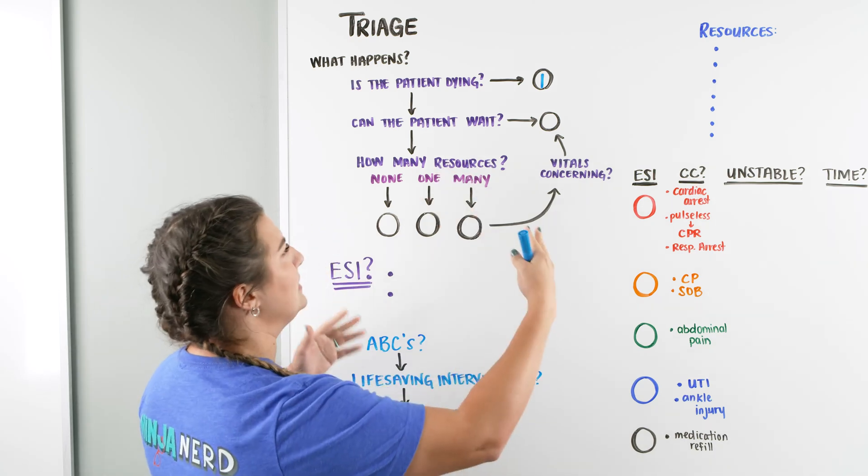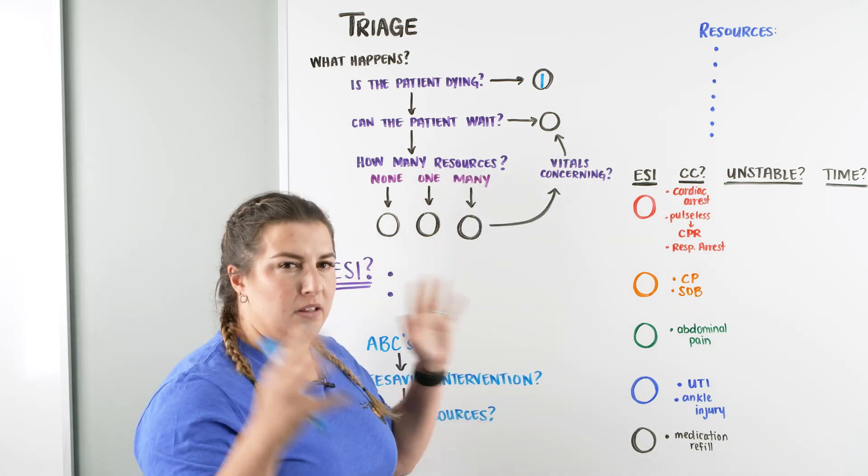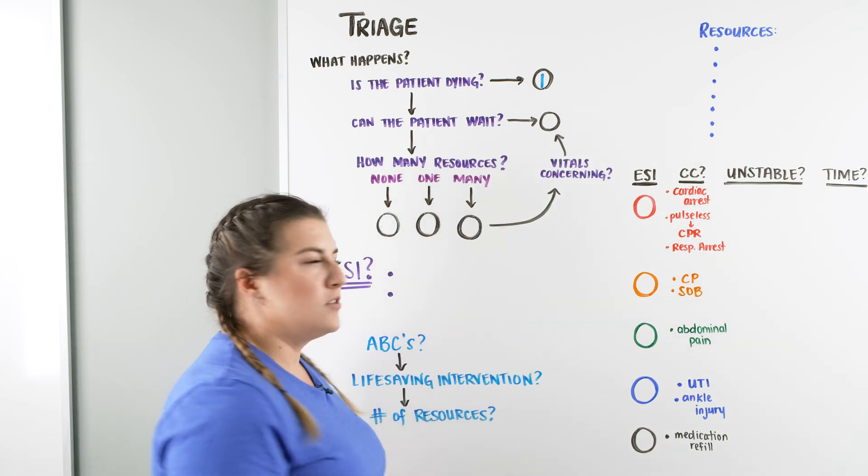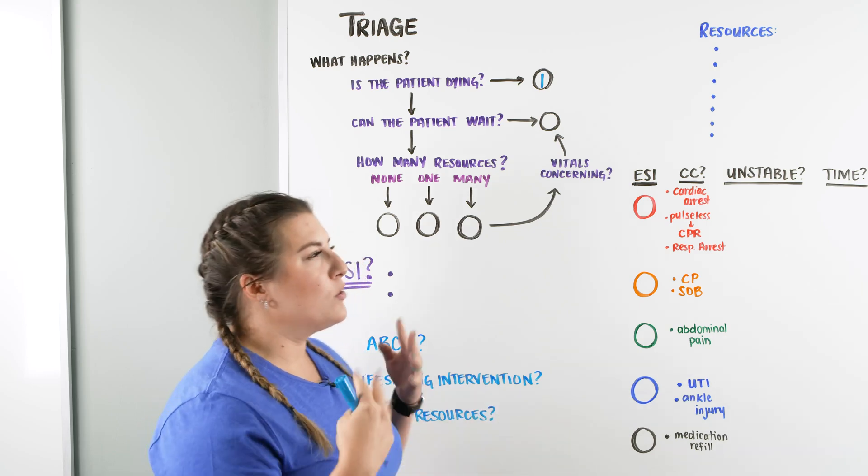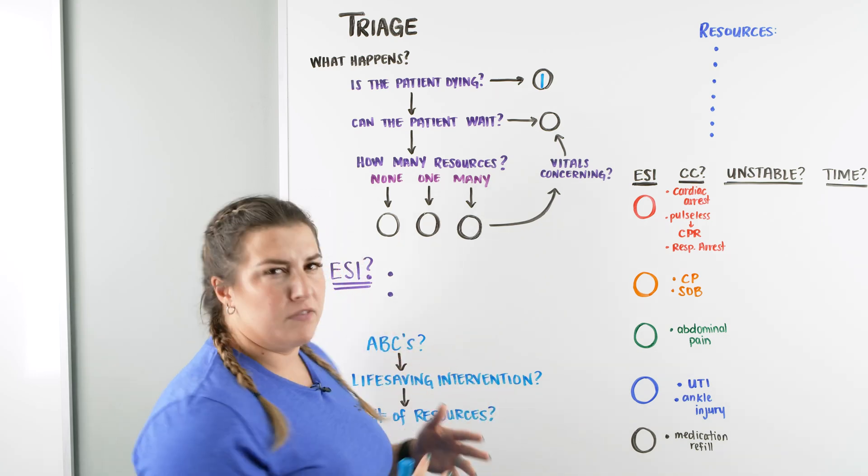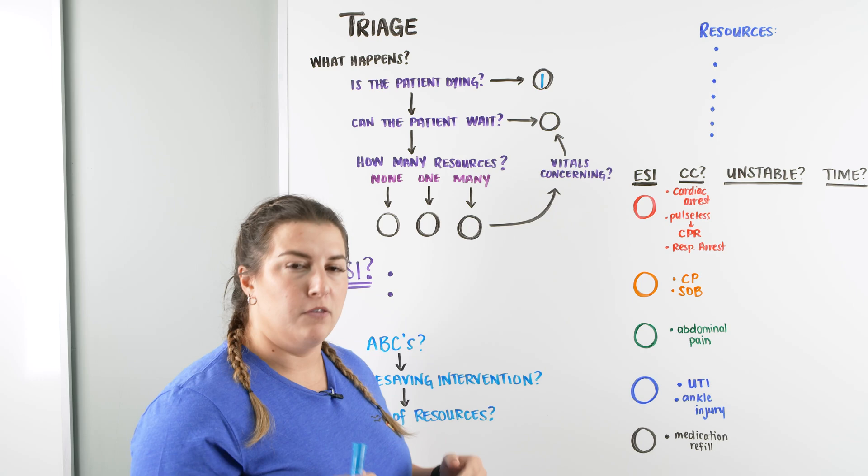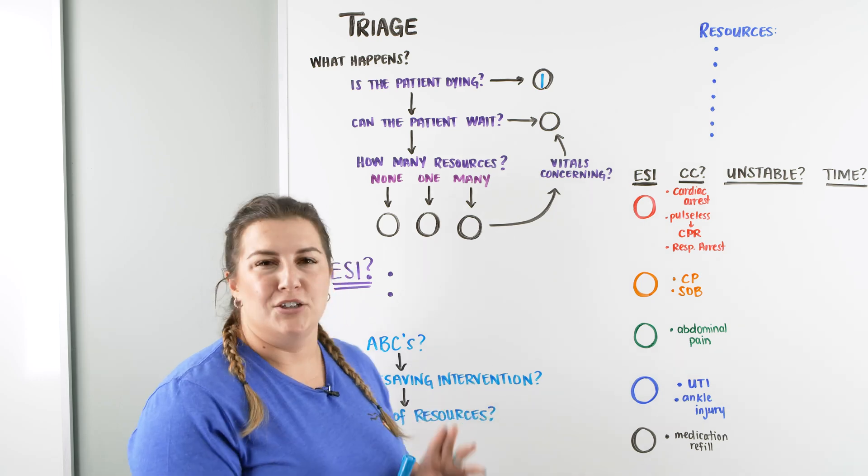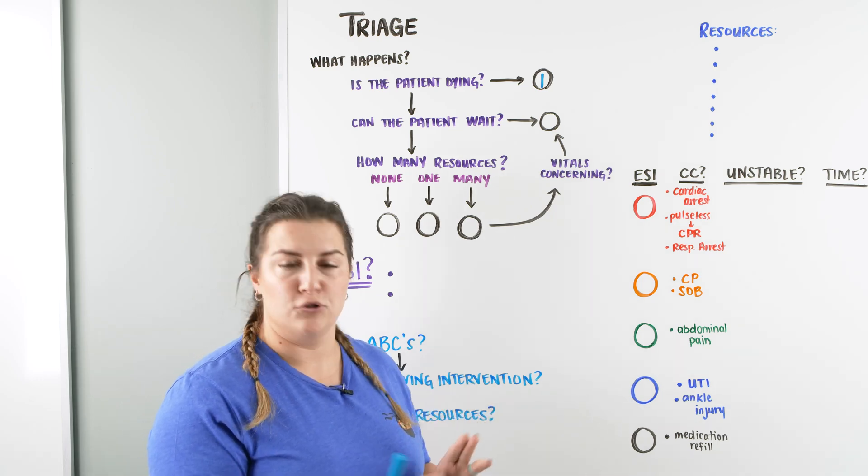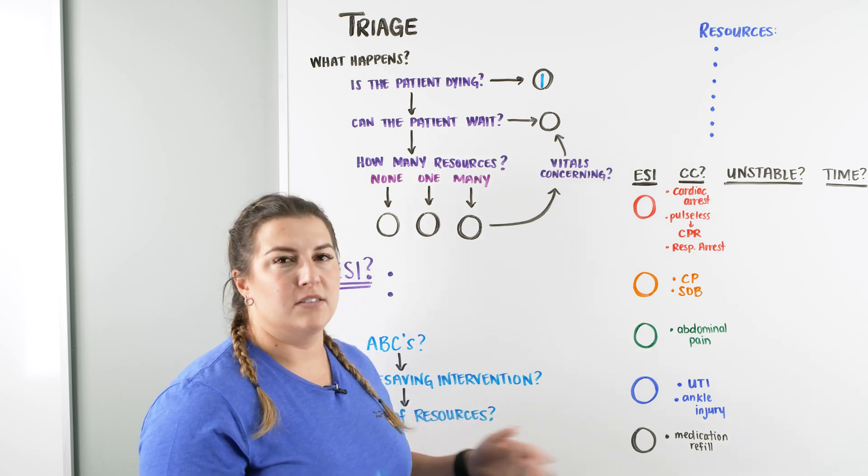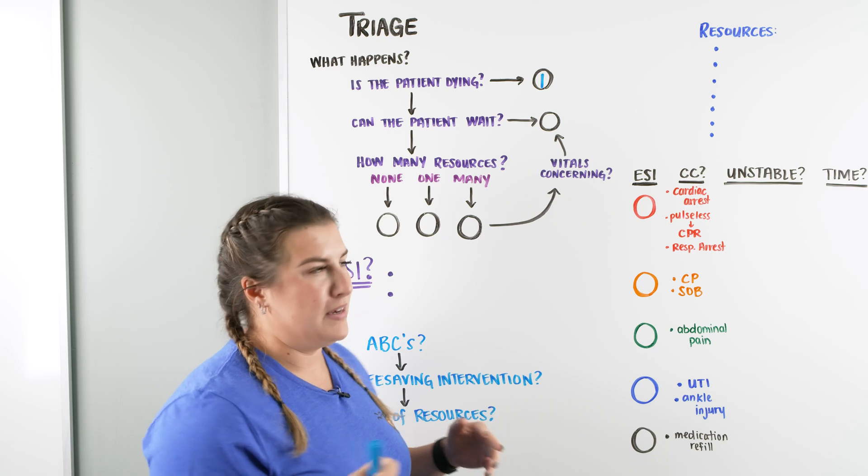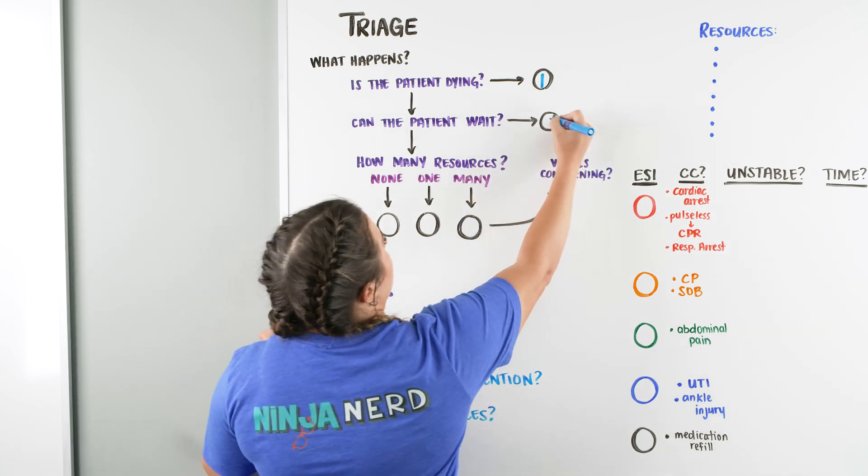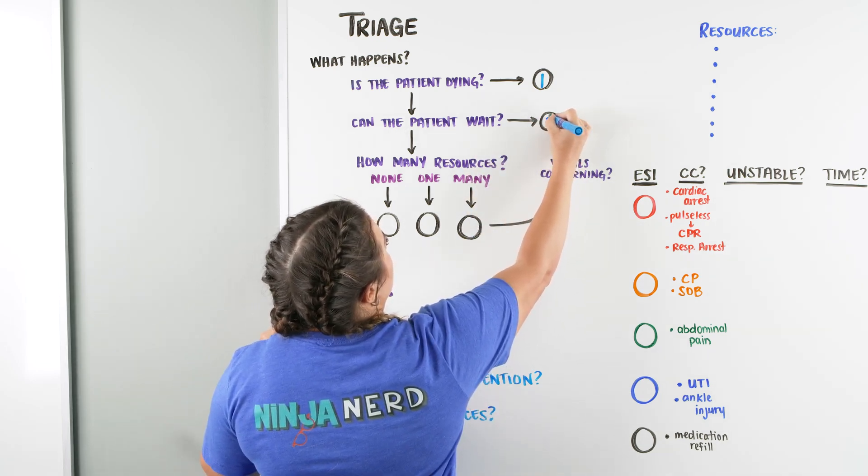If the patient is not dying, the next question you're immediately going to think to yourself is, can the patient wait? So is this somebody that's going to wait for a room or to get back? Or is this somebody that has to be seen relatively quick within the next maybe 10 minutes? And those are things we're going to be looking at like chest pain, someone who's having some type of stroke-like symptoms, or anything else that you would think along the lines like anaphylaxis. We're going to give them an acuity of a two.